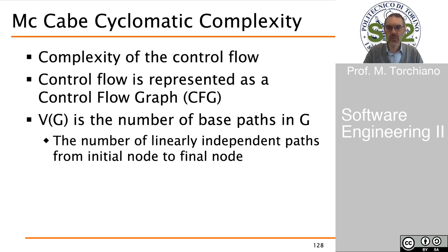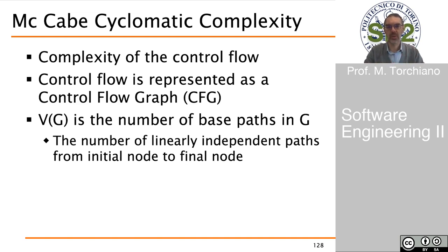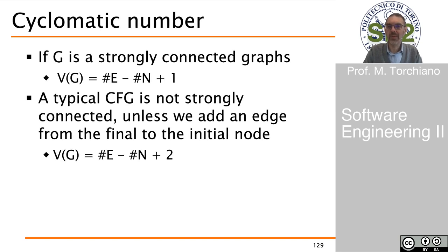If we transform a program into what is called a control flow graph — where every node is composed of a sequence of instructions that do not include any condition or jump — we can build a graph where every set of instructions is connected to another based on conditional instructions. The cyclomatic complexity, or McCabe complexity, is essentially the number of linearly independent paths that can be found in this control flow graph. For a strongly connected graph, this is the number of edges minus the number of nodes plus one.